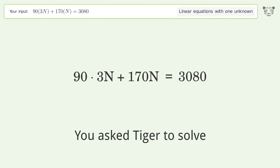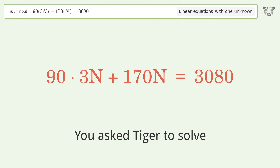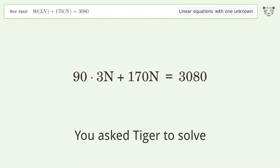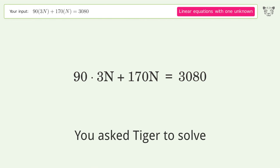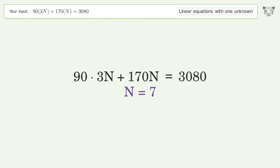You asked Tiger to solve this — it deals with linear equations with one unknown. The final result is n equals 7.